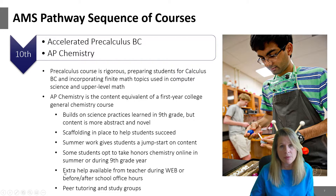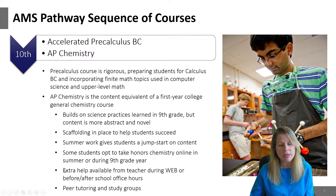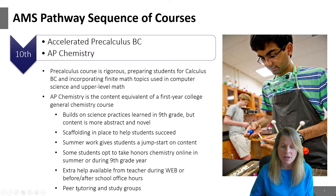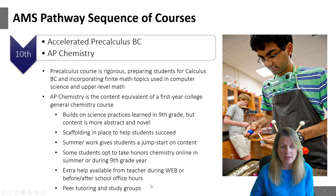We do have extra help available from the teacher — that's what webs are for. Most Wednesday afternoons the teacher is available for help during web, and all of our teachers have office hours either before or after school. There's also peer tutoring available from some of the National Honor Societies, like the Science National Honor Society. There are upperclassmen who were successful in AP Chemistry who can help you — sometimes learning from a peer helps put things in a different perspective. Students have also self-organized their own study groups, and that's helpful as well.